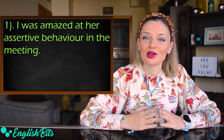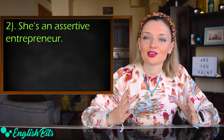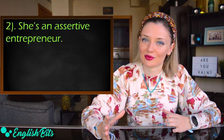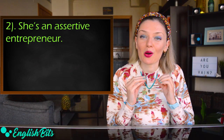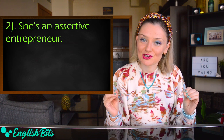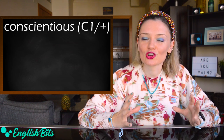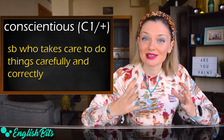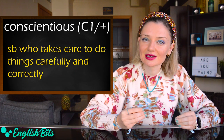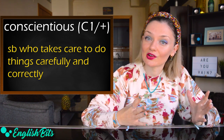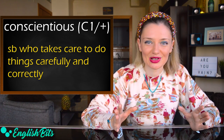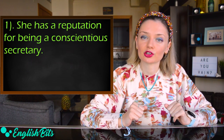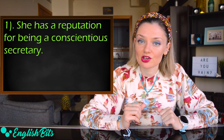Another example: She's an assertive entrepreneur. Now let's move on to our fifth positive adjective, which is conscientious. Conscientious describes someone who takes care to do things carefully and correctly. For example: She has a reputation for being a conscientious secretary.